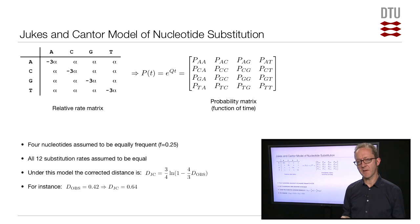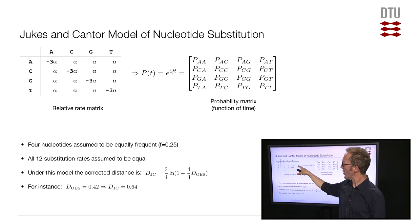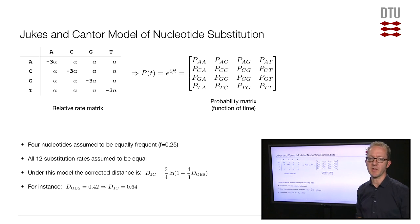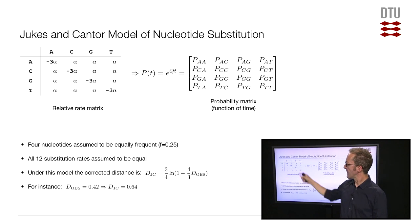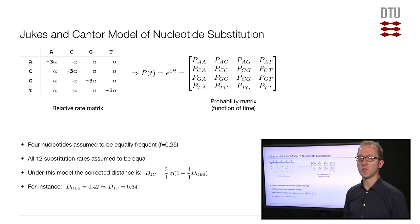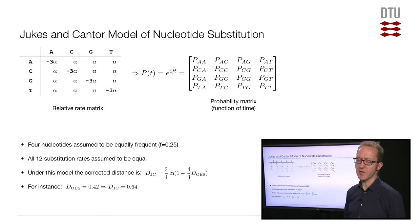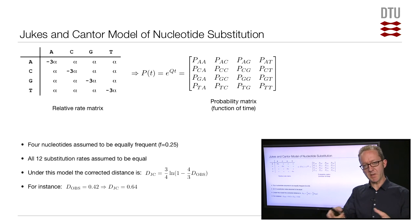A substitution model typically takes the form of a relative rate matrix — a table telling us for each possible pair of nucleotides the relative rates with which they change to one another. The simplest substitution model is the Jukes-Cantor model, which assumes that all possible substitutions occur with exactly the same rate, called alpha in the relative rate matrix. As a consequence, the model also assumes that all nucleotides will have the same frequency. These are fairly strict assumptions, probably not realistic for most real cases.